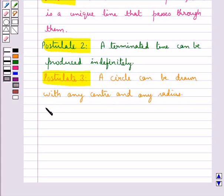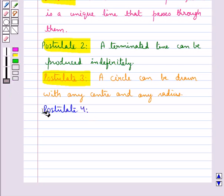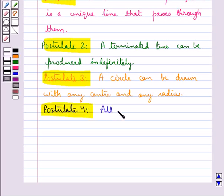The next postulate, that is postulate 4, says all right angles are equal to one another.